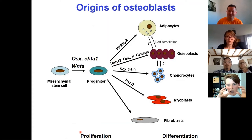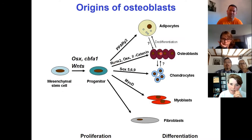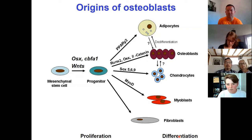Osteoblasts and osteoclasts don't come from the same place. An osteoblast comes from a mesenchymal stem cell. From a mesenchymal stem cell, various cell types can arise, but we know the specific genes that must be switched on — Runx2, osterix, and beta-catenin — for the lineage to commit to an osteoblast. The process from proliferating precursor cells through to a terminally differentiated osteoblast is called differentiation.